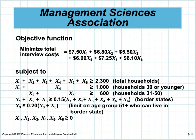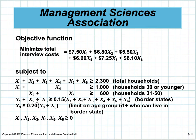We want to minimize total cost. We need at least 2,300 people total; X1 plus X4 must be greater than 1,000 for households 30 or younger; households 31 through 50 must total at least 600. Border state respondents must be at least 15% of the total, and the 51-or-older group living in a border state must be no more than 20% of that age group. These last two are percentage constraints with variables on both sides — they are not valid constraints as written.